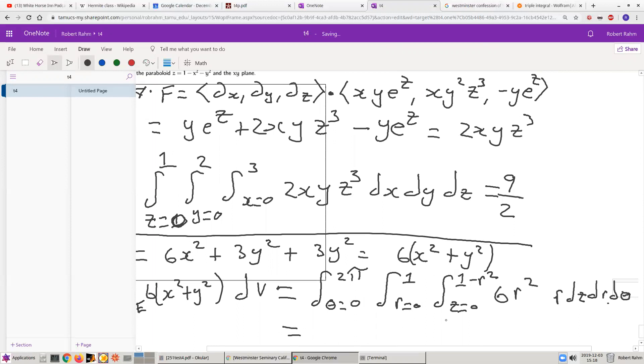which is 6x squared plus y squared, or in cylindrical coordinates, this is 6r squared. And this is again, this is a simple integral to do. It might be tedious, but it's a straightforward integral. And the answer is pi.